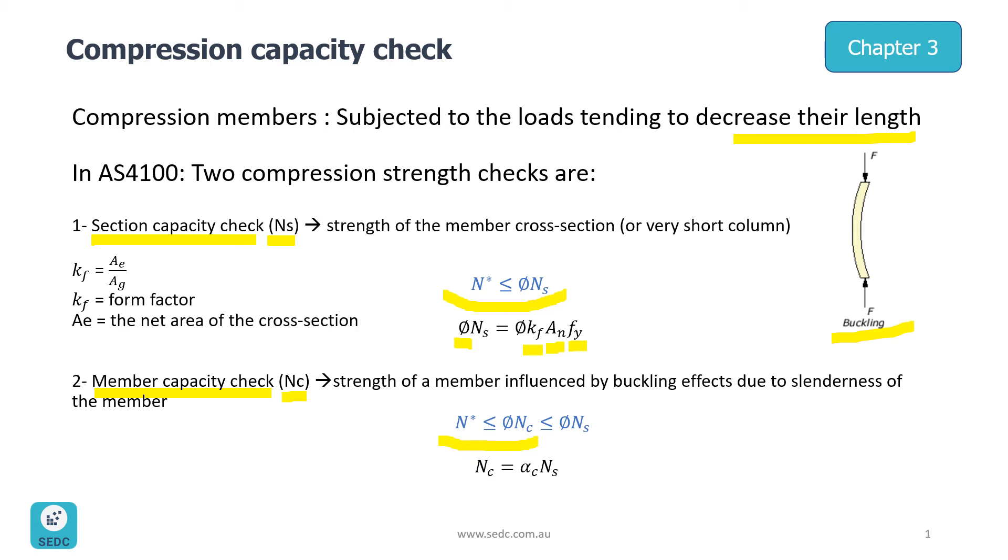As you can see the formula is very similar to section capacity check, but the difference is we have an extra factor of Alpha C which is a reduction factor which is looking at buckling effects. This Alpha C is usually less than or equal to one.